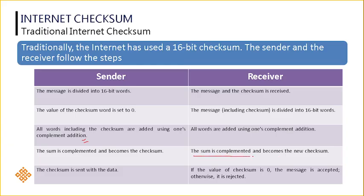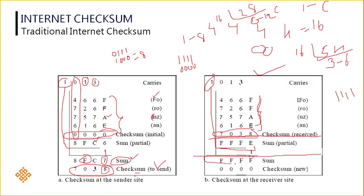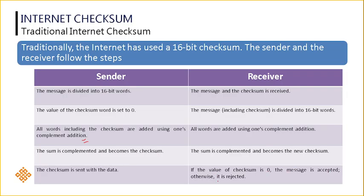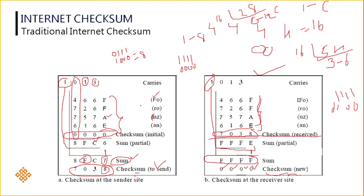The sum is complemented and it becomes the new checksum. The sum you got is F, F, F, F. Complementing it: F is nothing but 1111, if you complement it is all 0s. Similarly for each F, you get 0. That is nothing but your new checksum — all zeros. If the value of the checksum is 0, the message is accepted; otherwise, it is rejected. Since the data is not corrupted, the same data we received, we got all 0s, meaning there is no error and the data is accepted. If any one bit is changed — for example, instead of F, if you receive A — then surely you will not get the checksum as all 0s. You will get some other value, and then you can say there is some error and the data is rejected. In this way, the Internet Checksum helps us to identify if any error has occurred at the receiver side and helps us to recognize if any data is lost.